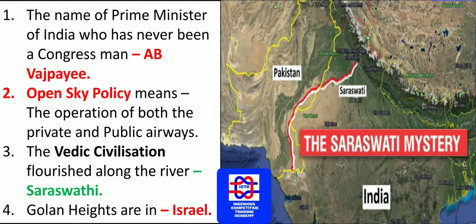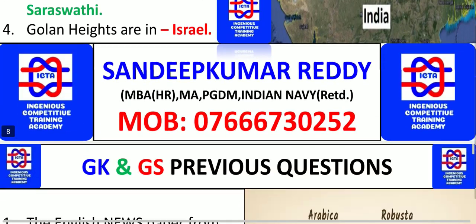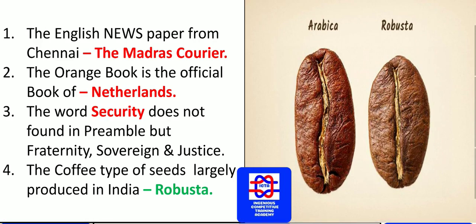Golan Heights are located in Israel — please go through the internet for more details. The Madras Courier was the first English newspaper from Chennai. The Orange Book is the official book of Netherlands — note that different countries have different official books such as white, yellow, and brown books.